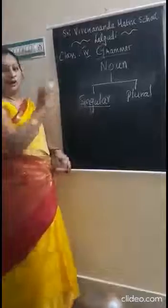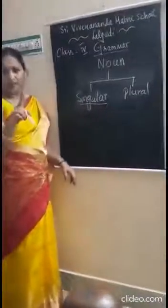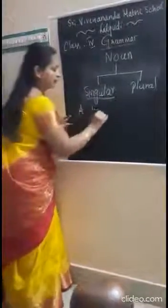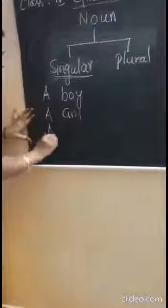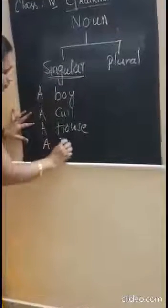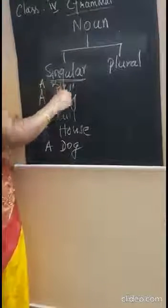What is a singular noun? A noun that names one person, one animal, one place, or one thing is called a singular noun. Examples: a boy, a girl, a hospital, a house, a dog, a ball. These are singular nouns.